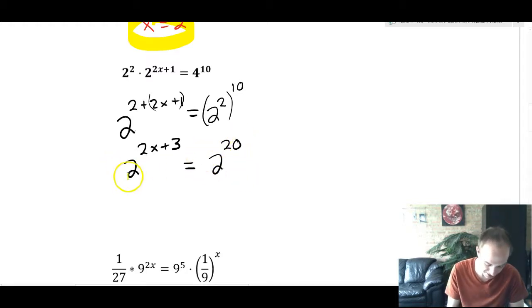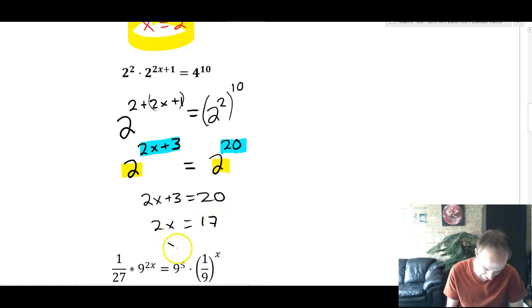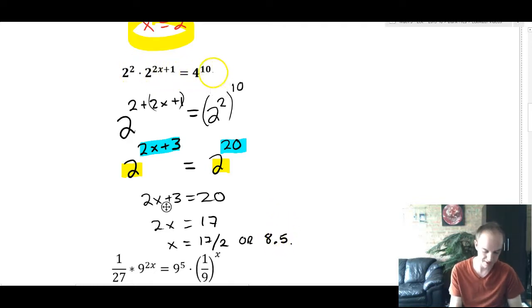Now you have a single same base on each side. So you can set the powers or the exponents equal. So we're going to write 2x + 3 = 20. Subtract 3 and you get 2x = 17. And x is 17 divided by 2 or 8.5. I'm going to spare you the check step. But again, you could plug in 8.5 just as a check into all the places you see an x, which is only 1, and see what you get.